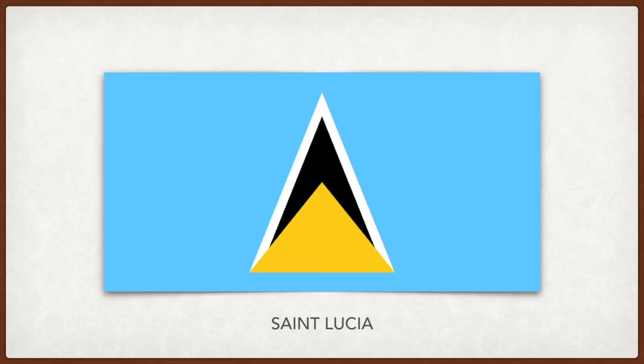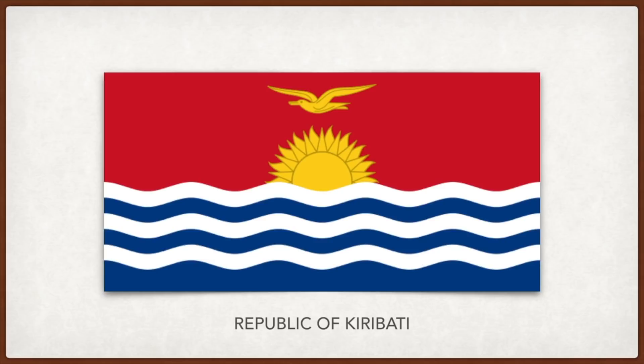Kiribati: the three blue and three white waves represent the Pacific Ocean which surrounds the country; the sun on the horizon represents the nation's position straddling the equator; and the frigate bird symbolizes command of the sea, power, and freedom.